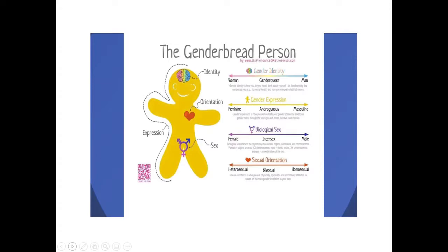Our sexual orientation — who we like and love — is represented by the heart area. The outer area of the genderbred person represents gender expression. They all exist on a spectrum, meaning there's not just two options. We might have been taught there are only two ways of being in terms of biological sex or gender expression, but there is more diversity and more options for how we can show up in the world.